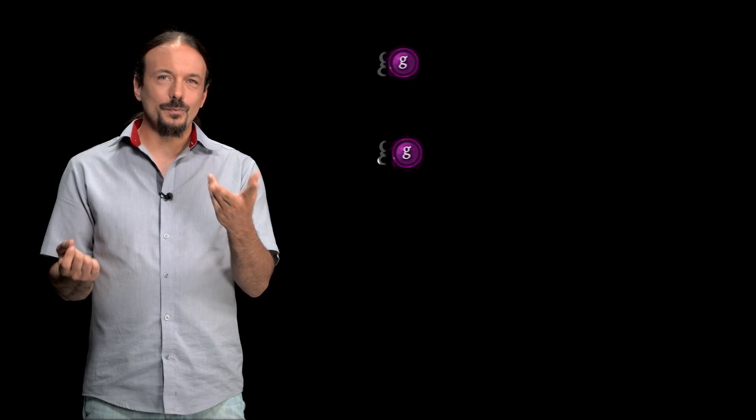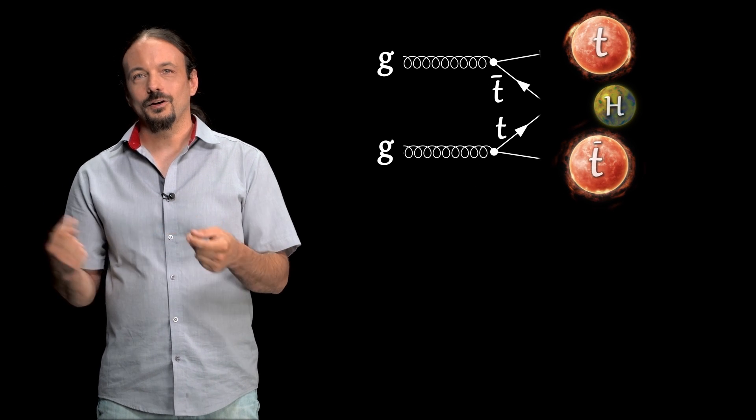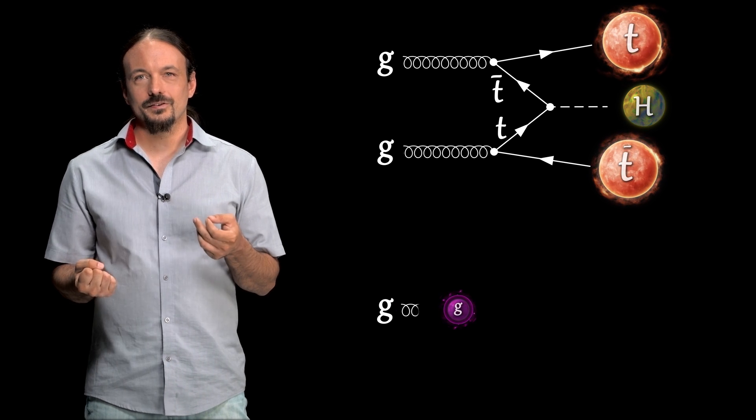Now, why is seeing the Higgs with two tops telling us something about how the Higgs was produced? That's a consequence of how such a configuration can appear. There's basically only two possibilities. Either two pairs of top quarks are created, and the top from one pair fuses with the anti-top from the other pair, creating a Higgs boson, or a single top quark pair is created, and the Higgs boson can be radiated by one of the quarks.